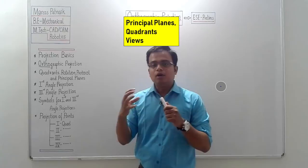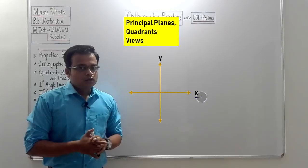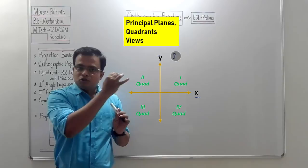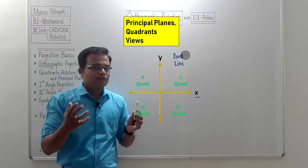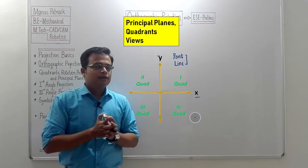Now let's talk about quadrants and principal planes. As far as the two-dimensional coordinate system is concerned, you have a Y-axis, an X-axis, and quadrants in the form of first, second, third, and fourth. In a 2D system, you can locate a point or position a line — a line with only two coordinates, x1, y1 and x2, y2 — and plot it successfully.